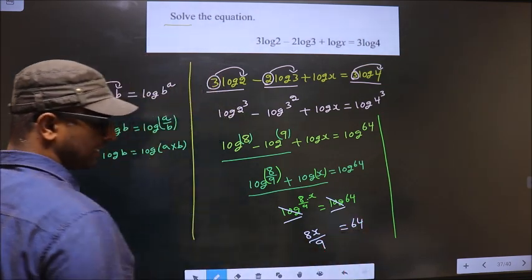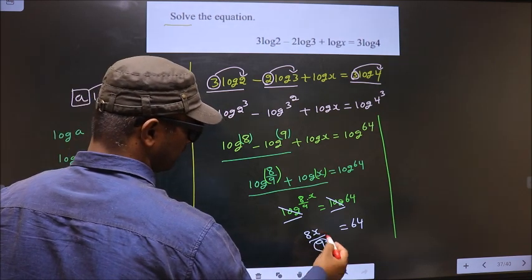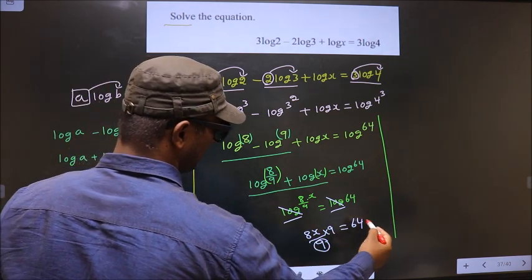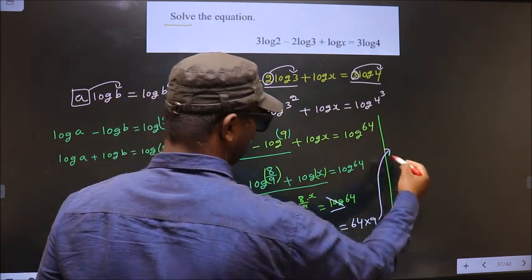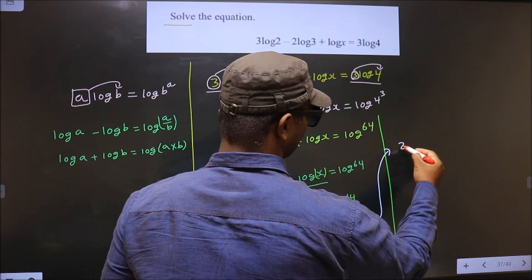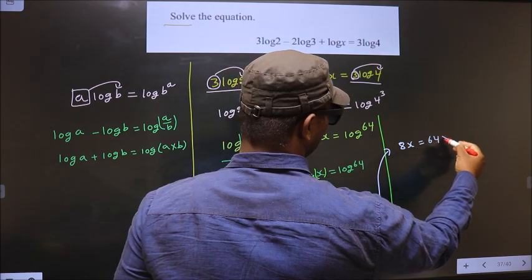To get x, first remove the 9 by multiplying both sides by 9. So we get 8x equals 64 times 9.